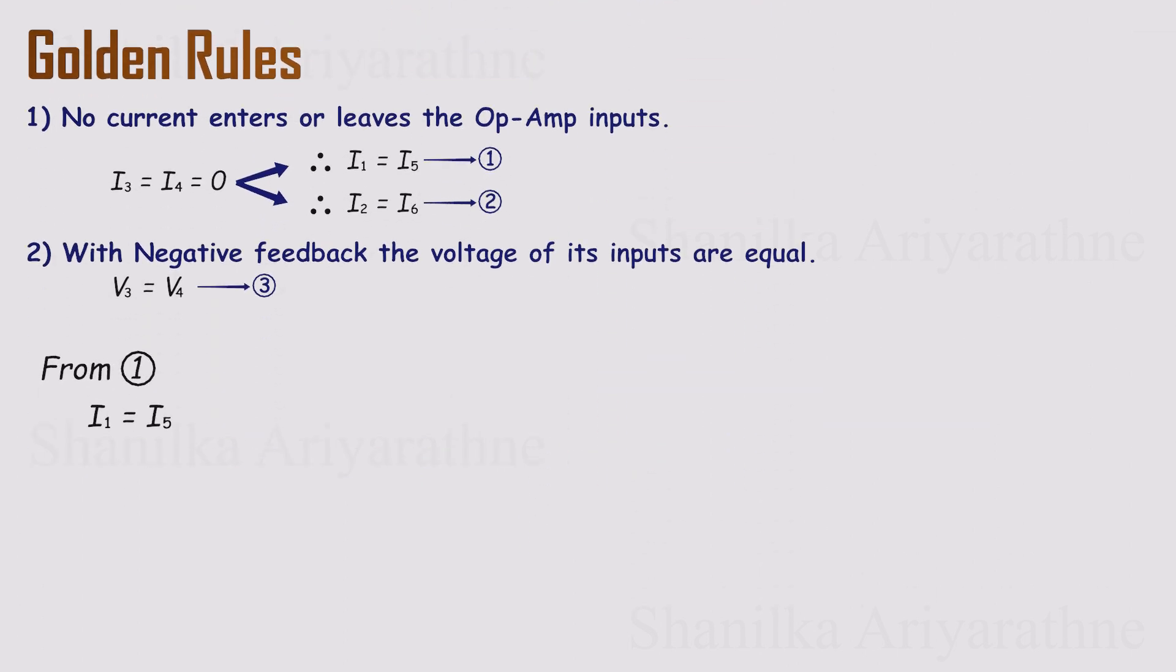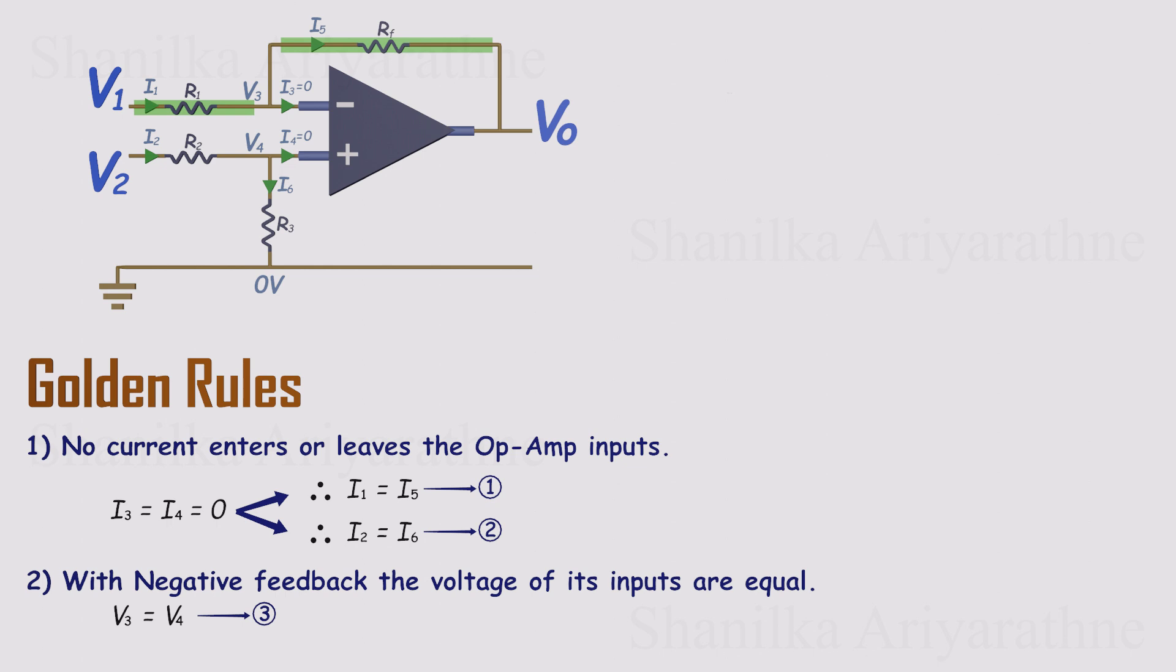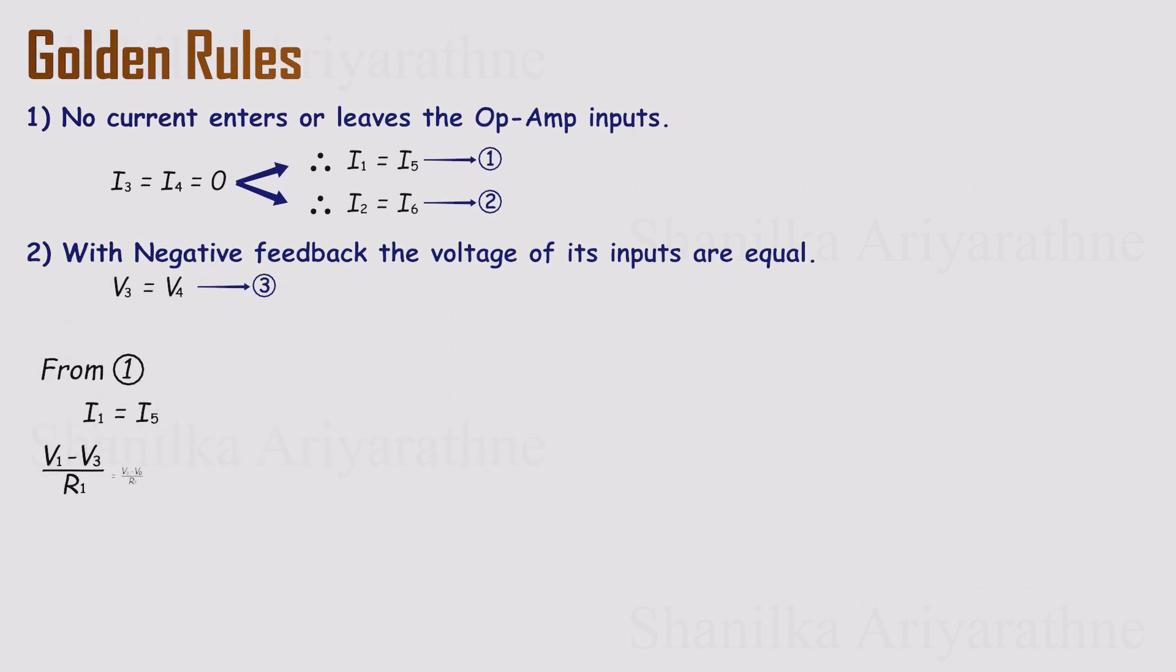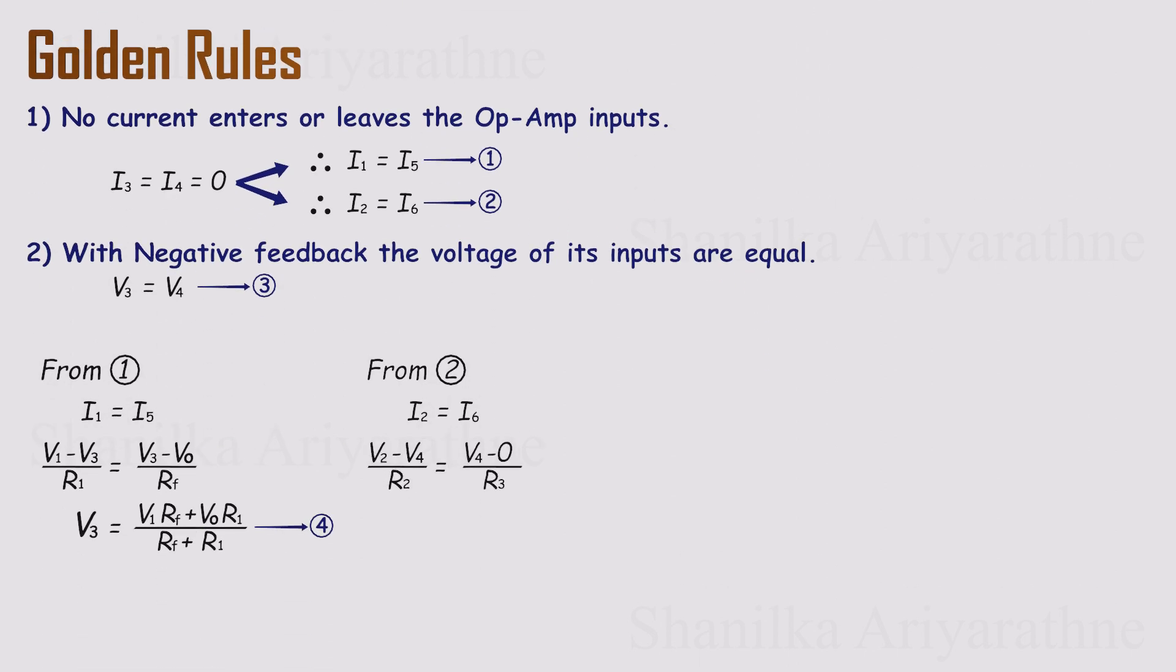Let's start with equation 1. I1 equals I5. Looking at the circuit, I1 flows through resistor R1 and I5 flows through the feedback resistor, RF. By Ohm's law, each current can be written as the voltage difference across its resistor divided by the resistance. Substituting those expressions into the equation gives us a relationship for V3, the voltage at the inverting input. Now let's do the same for equation 2. I2 equals I6. Again, watch the resistors the currents flow through. I2 flows through R2 and I6 flows through R3 down to ground. Writing both currents with Ohm's law and substituting them back into the equation gives us an expression for V4, the voltage at the non-inverting input.